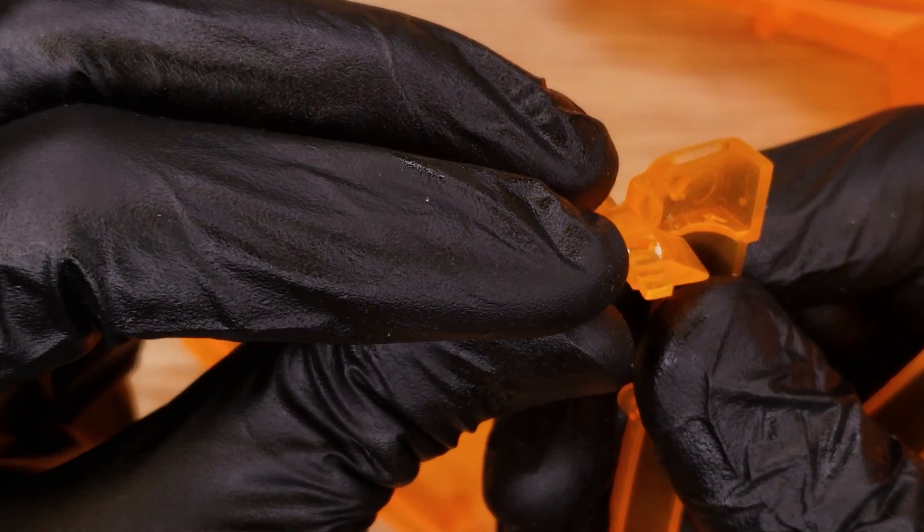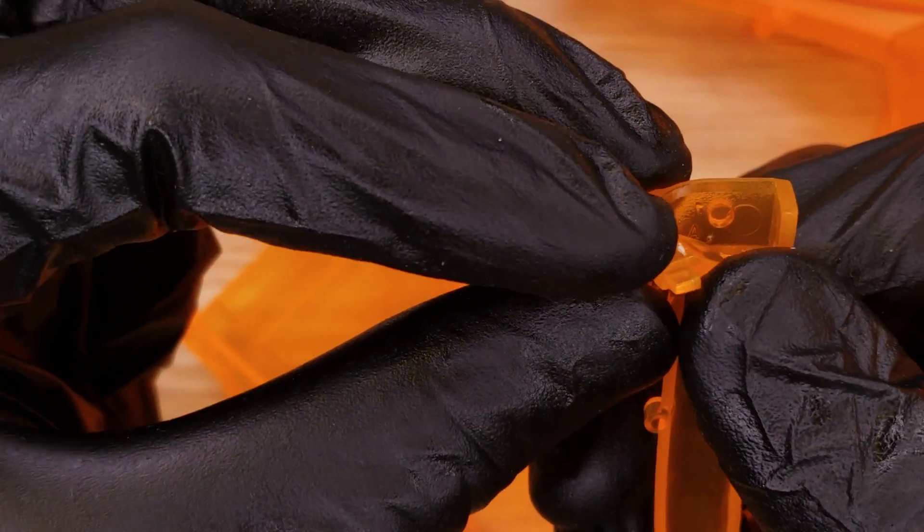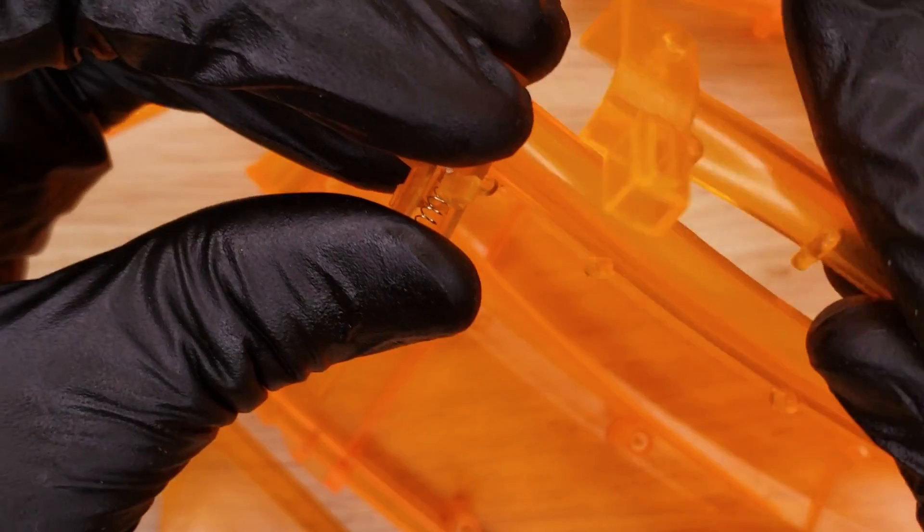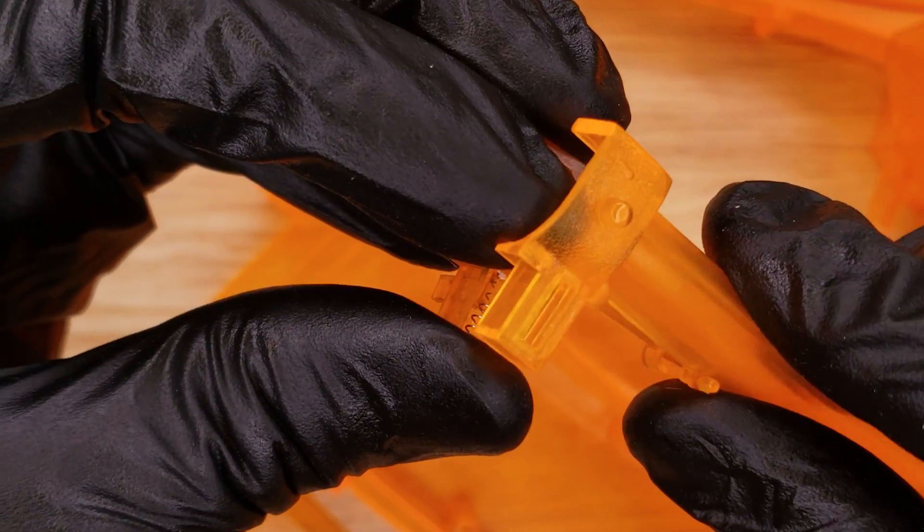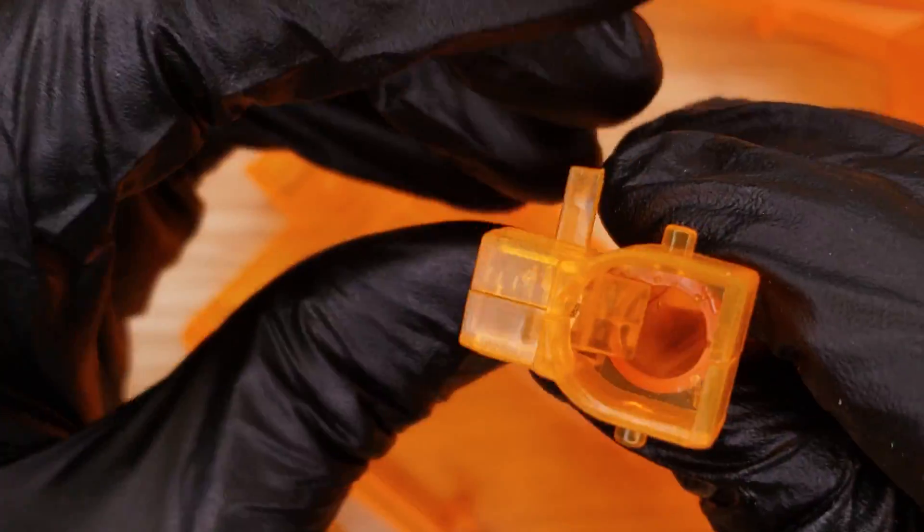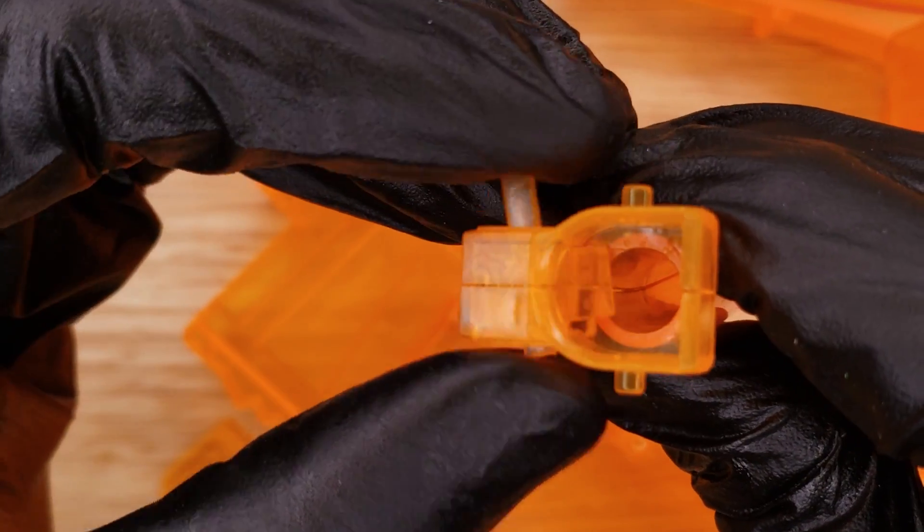There's a spring in the back, which is an easy spring to lose. And then the other half of the feed tube goes over it. Like that. So then you can slide the catch back.